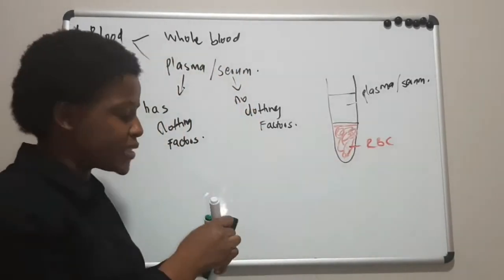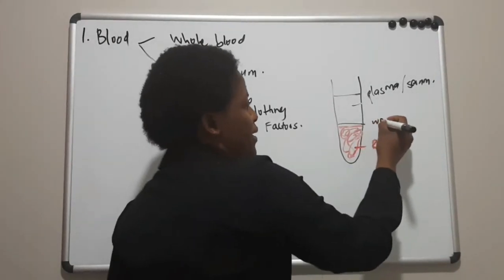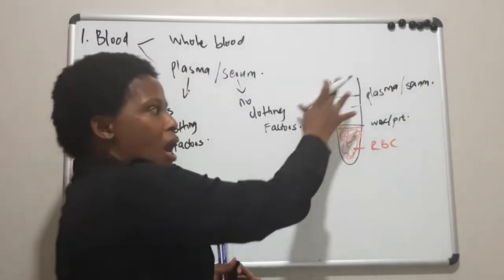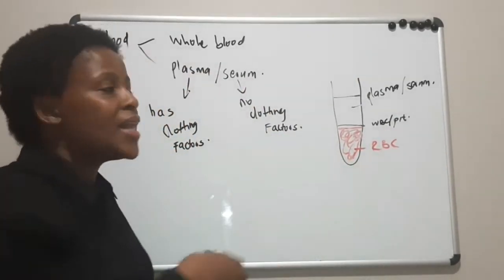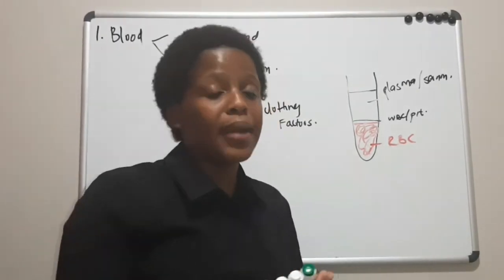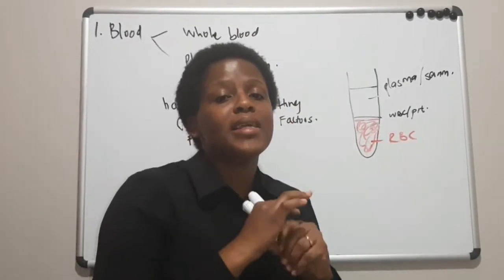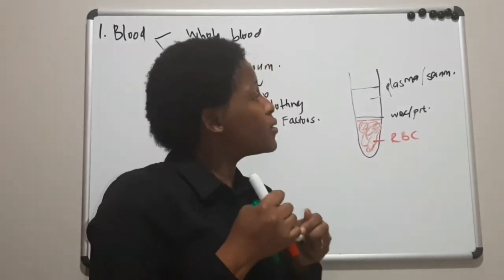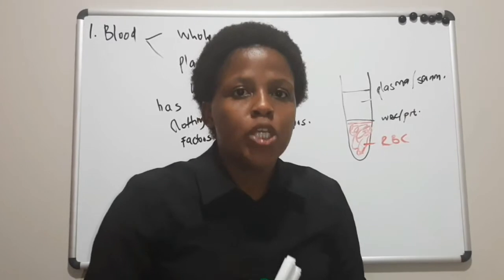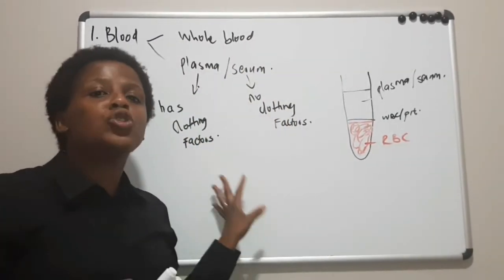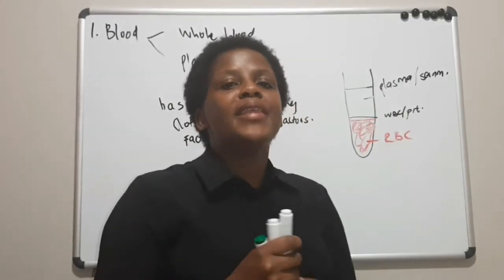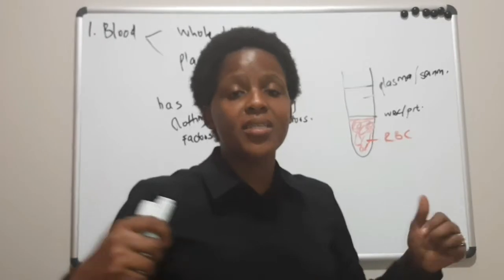We collect blood in evacuated tubes. The most common sample we get is serum. We get serum if we have let the blood clot. That is why serum will not have any clotting factors — because those clotting factors are used up during clot formation in the tube. When you spin it down, that liquid part is called serum because it has no clotting factors.